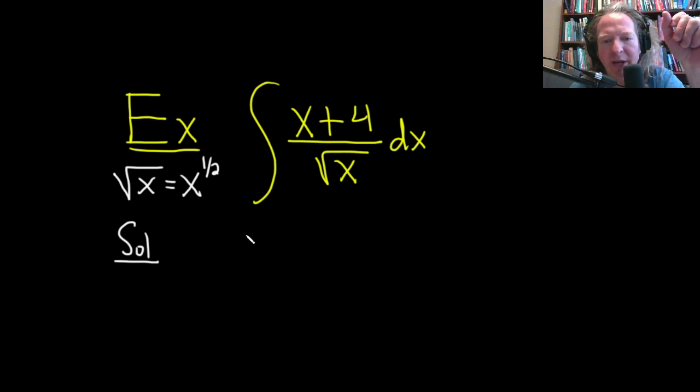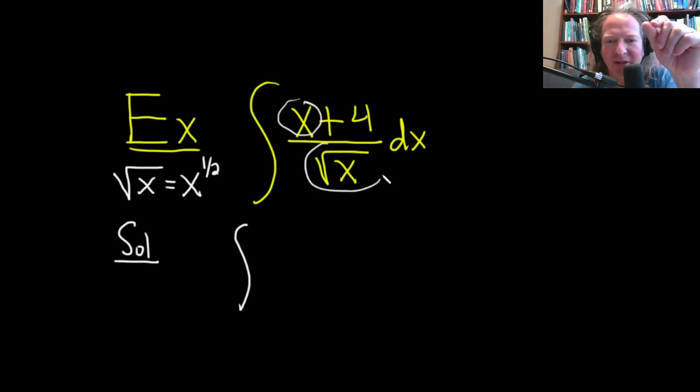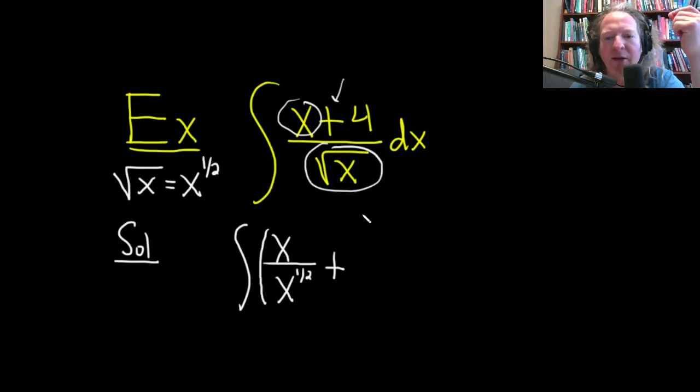So let's go ahead and break it up. And at the same time, we're going to think of the square root of x as x to the one half. So it's going to be this over this. It'll be x over x to the one half, and then parentheses plus 4 over x to the one half, just like that. And then dx.